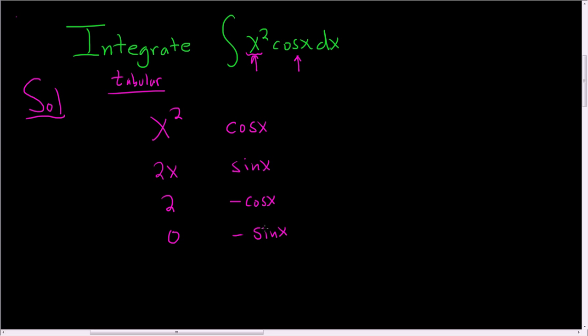The next thing we do is put plus and minus signs in front of these: so plus, minus, plus, minus. Then we draw arrows, just like this.